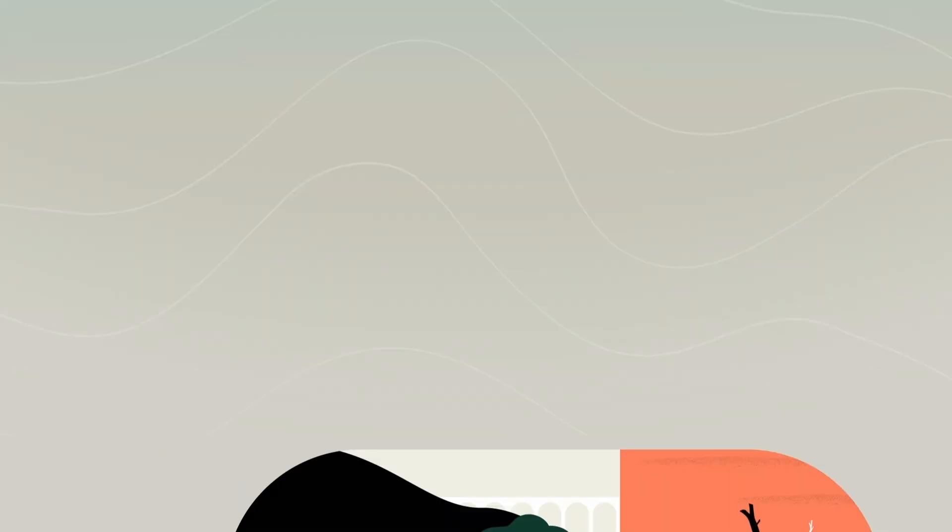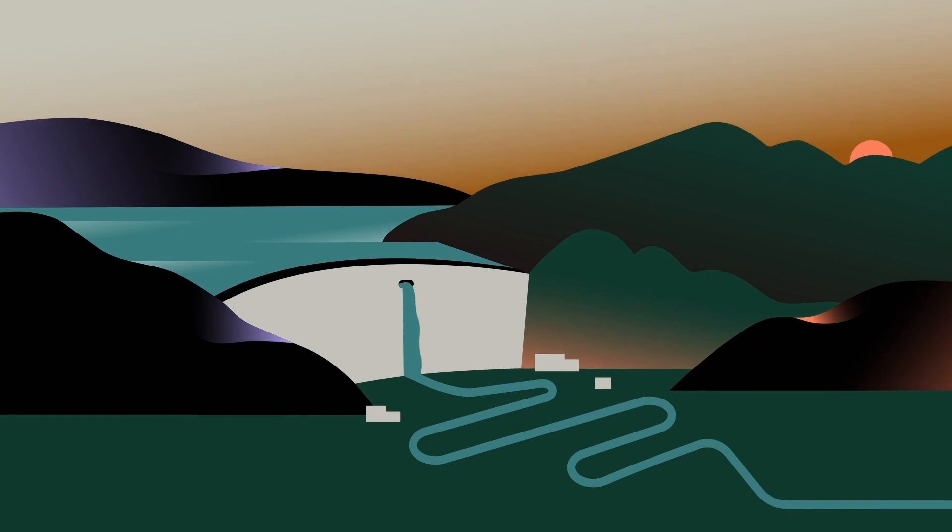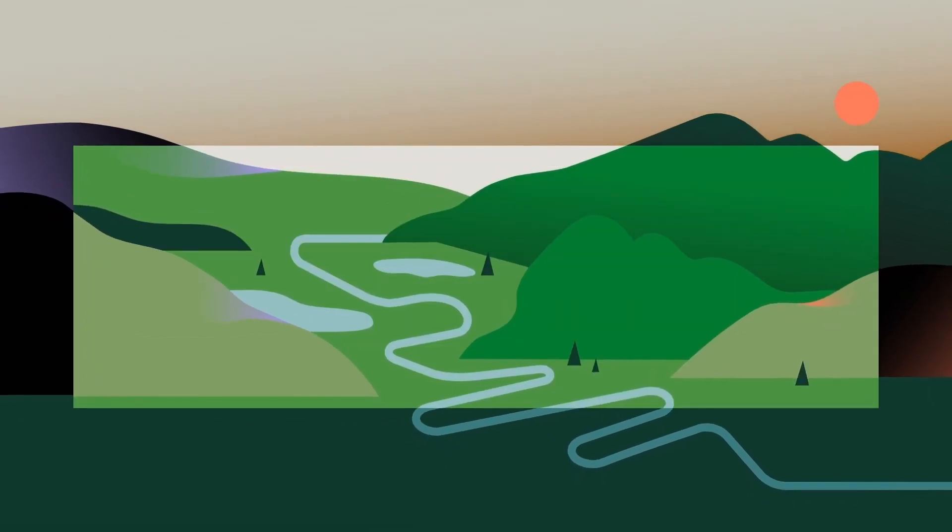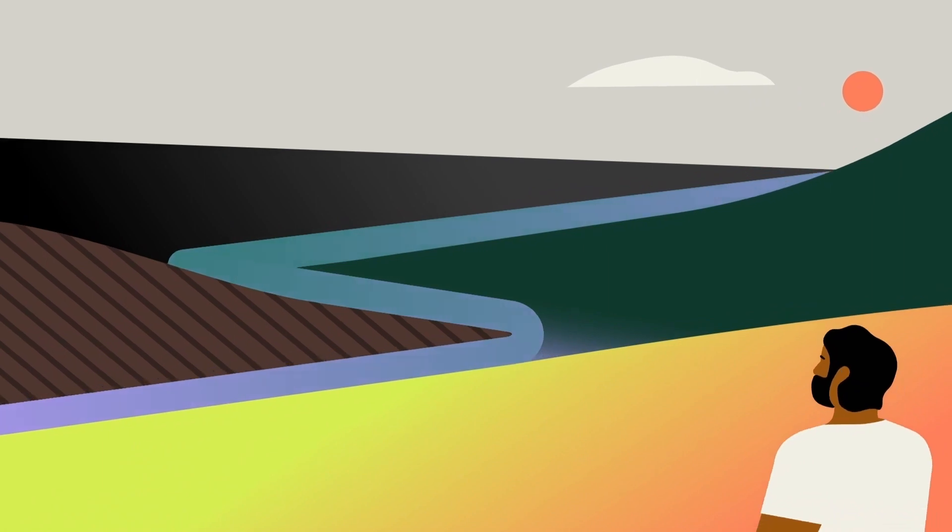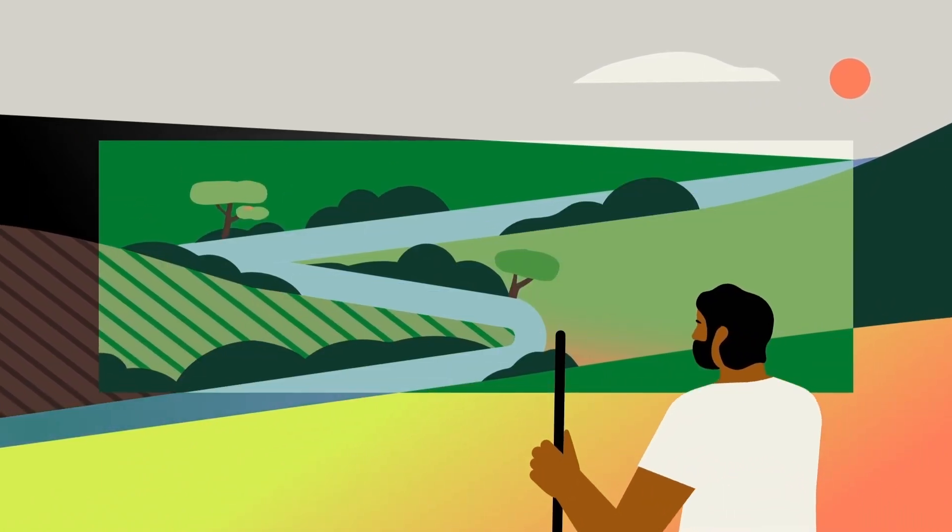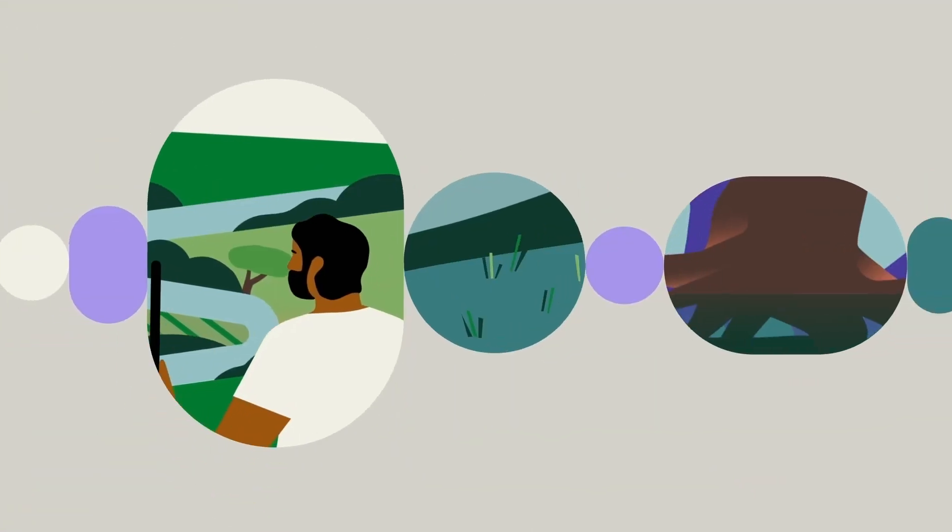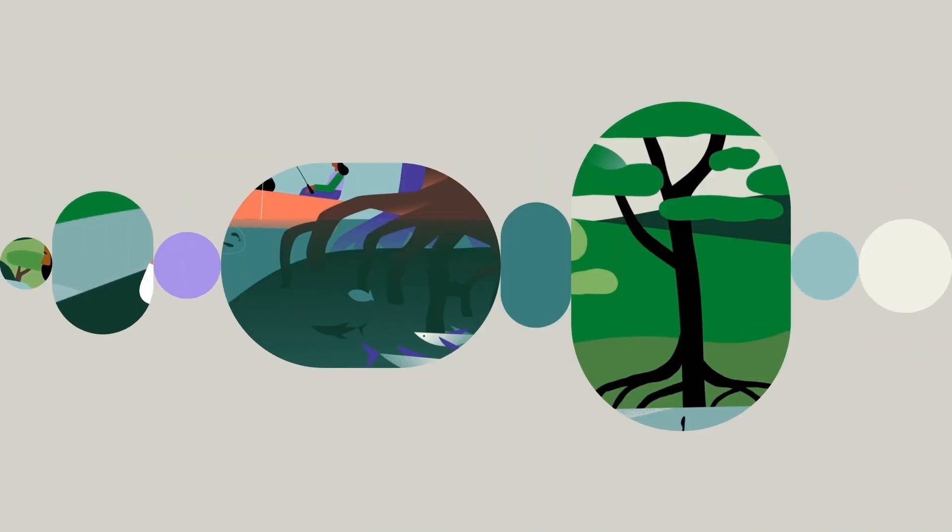But we can reverse the flood of bad news with the choices we make. We can adjust or remove barriers on rivers, returning them to their natural flows. We can help farmers keep fertilizers on fields and out of waterways. And we can partner with communities to protect the entire journey our water takes.